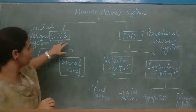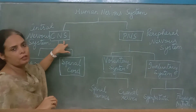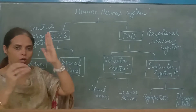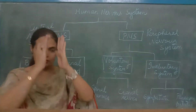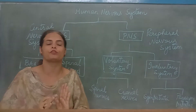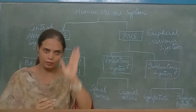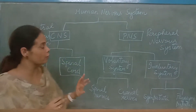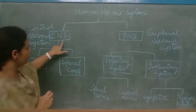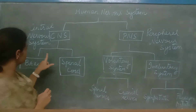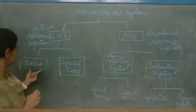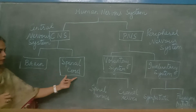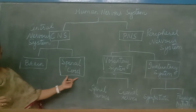Now why do we call it the central nervous system? Because the CNS is always present in the center line of the body — it is located in the mid of the body. The central nervous system consists of the brain and the spinal cord.